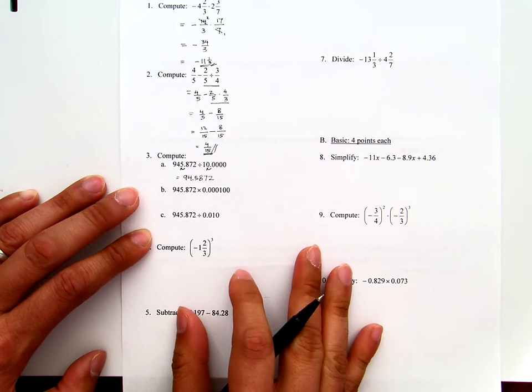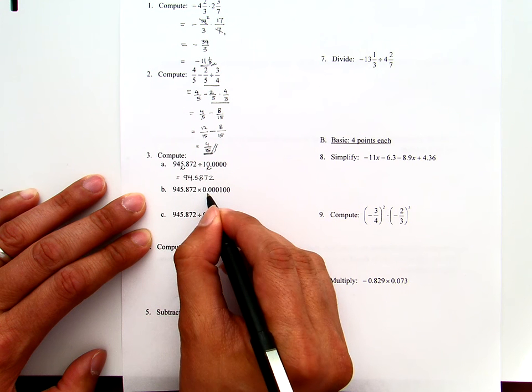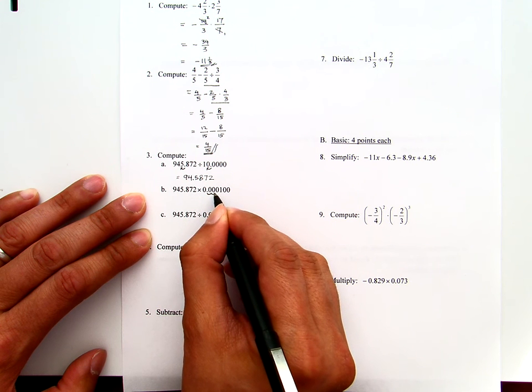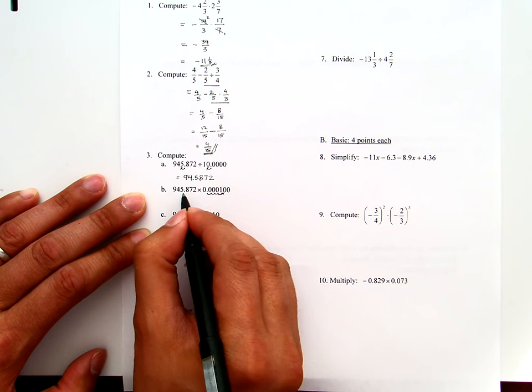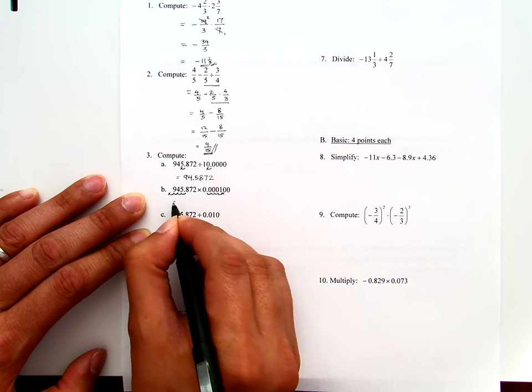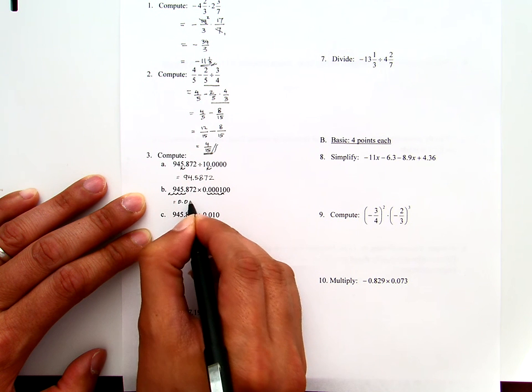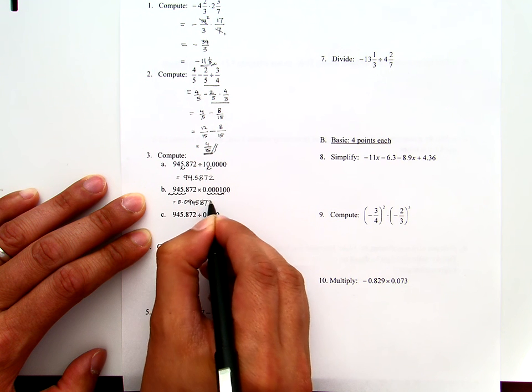When we divide, we move the decimal point in the same direction. When we multiply, let me make this one: one, two, three, four, and move four times to the right. Therefore, the one here will move four times to the left: one, two, three, four. That's 0.0945872.